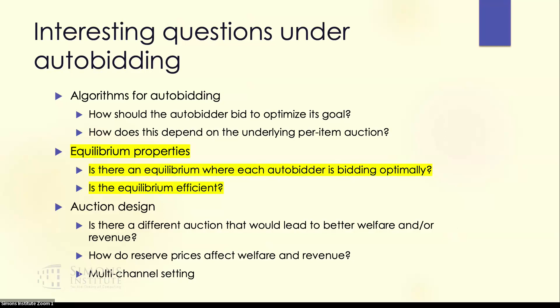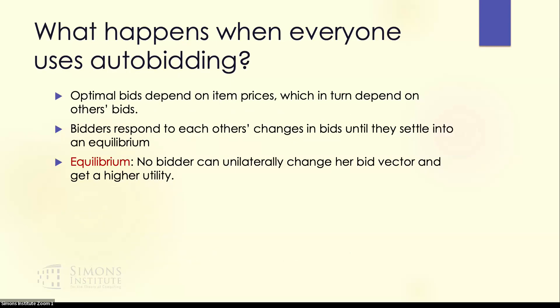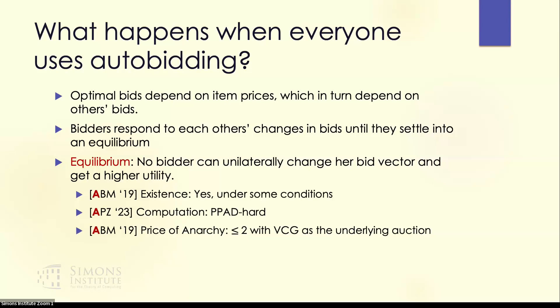The next topic is what happens when we're not just looking at one bidder with all other bids fixed, but all bidders are in fact using auto-bidders. So everybody is using an auto-bidder and the bids can change. Clearly the optimal bid for a bidder depends on the prices they see, and the prices they see depend on the bids of the other bidders. So they keep responding to each other's bids until they reach an equilibrium. The question is: what properties of this equilibrium can be proved? We can show that the equilibrium exists under certain conditions — basically some continuity conditions and the items being small.